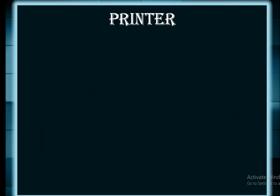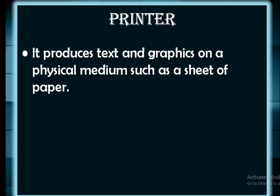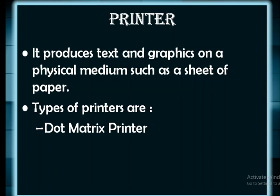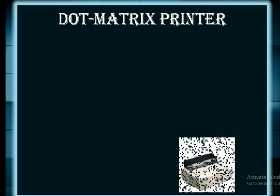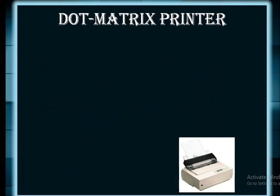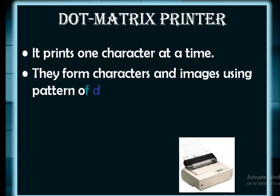The next output device is the printer. It produces text and graphics on a physical medium such as a sheet of paper. There are various types of printers: dot matrix printer, inkjet printer, and laser printer. The dot matrix printer prints one character at a time, so it is quite slow. It forms characters and images by using patterns of dots.